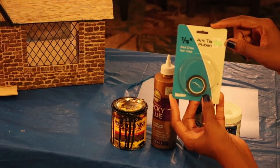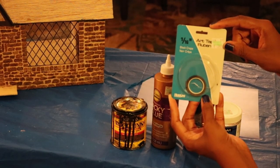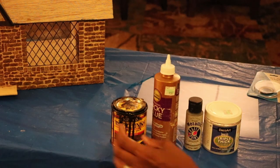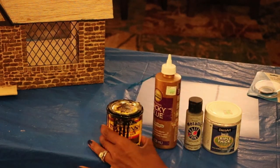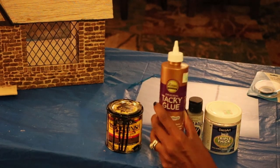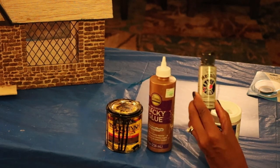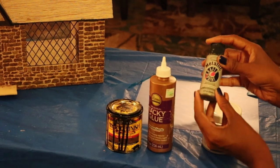So let's get started. Things you'll need are art tape, and this is the 1/16th inch and I got it at Hobby Lobby. You'll need wood stain, tacky glue, metallic craft paint, and I'm using the color galvanized tin.